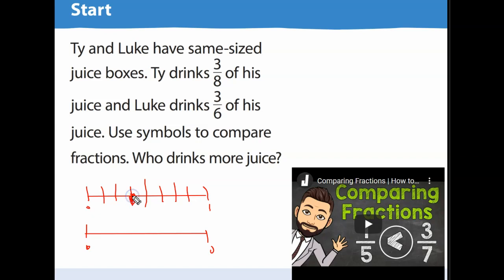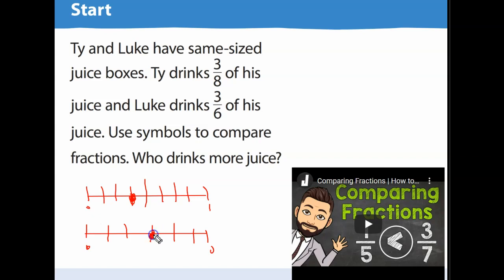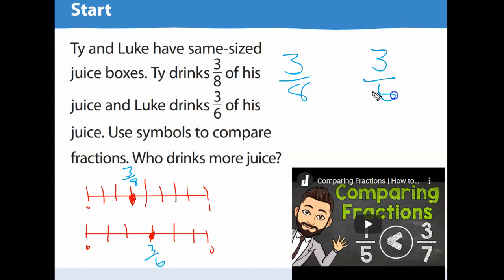Three-eighths is right here — one, two, three. For the other one, sixths: cut it into thirds, then cut each third in half to get sixths. One, two, three — that's 3/6, right there. Label them. So we have 3/8 and 3/6 on the number line.